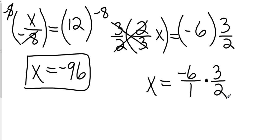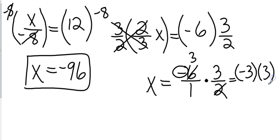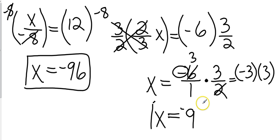We can cancel the 2 into the 6. Don't forget the negative sign — there's no canceling of the negative sign, it's still there. So now I have negative 3 times 3, which gives me an answer of negative 9. x equals negative 9.